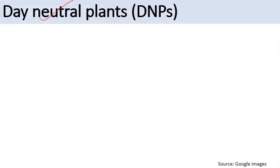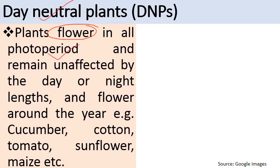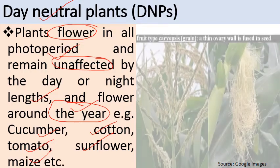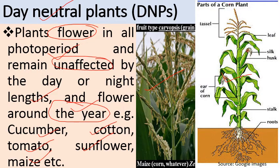Day neutral plants, as the name indicates, are independent of day duration. Flowering in these plants does not depend on any photoperiod — they remain unaffected by day or night lengths and can flower throughout the year. Examples are cucumber, cotton, tomato, sunflower, and maize. In maize, the male inflorescence is commonly known as the tassel, and the silk of the female inflorescence represents the stigma.